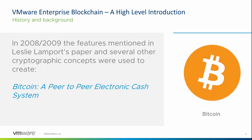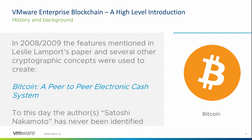Another thing that happened was in 2008-2009, some of the features mentioned in Leslie Lamport's paper and several other cryptographic concepts were also used to create the technology we now know as Bitcoin. Bitcoin was described originally as a peer-to-peer electronic cash system. The paper around Bitcoin was authored by someone or a group of individuals called Satoshi Nakamoto — a pseudonym for either an individual or a group of individuals, but to this day the author has never been identified.